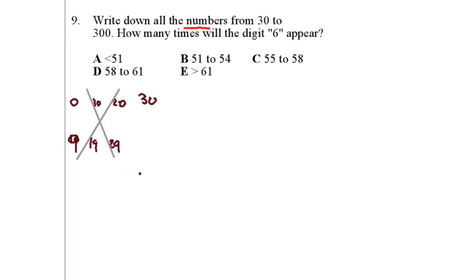Now from 30 up till 39, how many 6's do I have? Just 1. Then from 40 to 49, 1. Then from 50 to 59, 1. Right? What are these ones? 36, 46, and 56.